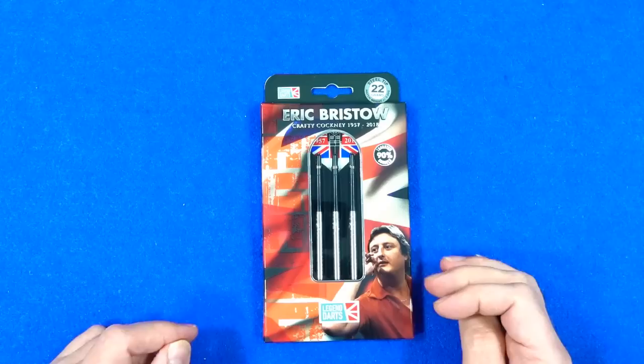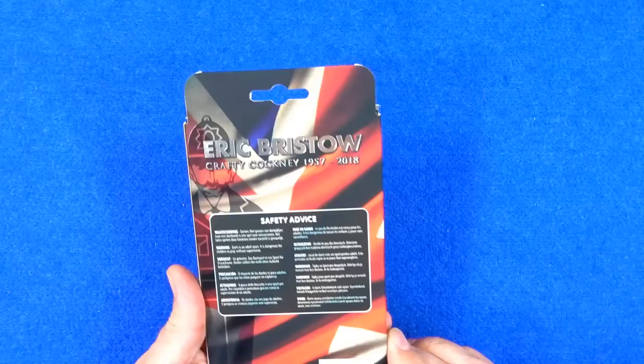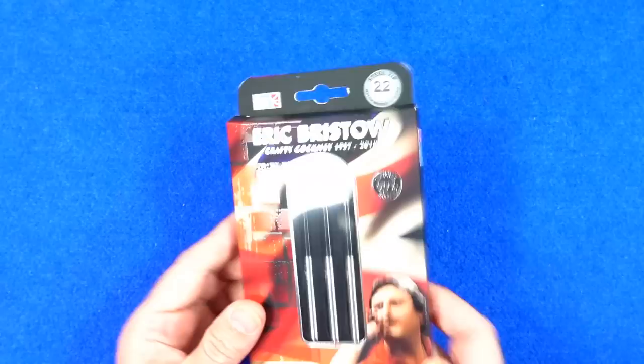As you can see, it comes in this cardboard packaging. You've got Eric Bristow on the front and obviously Union Jack and there's kind of a police picture on there. Eric Bristow, Crafty Cockney, 1957 to 2018. Three years since we've lost Eric. A very sad day that was.